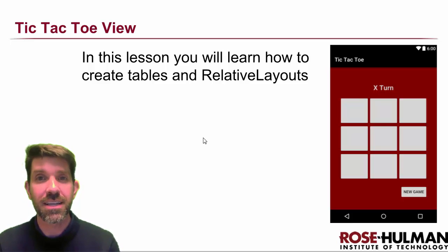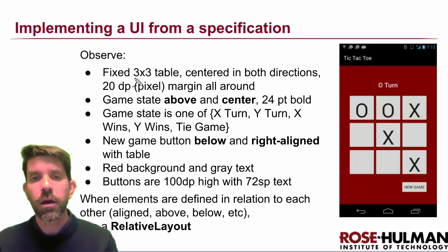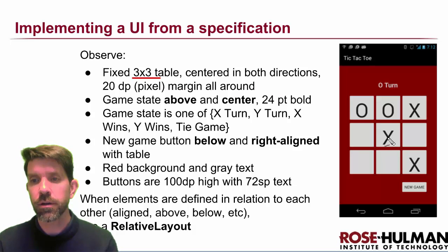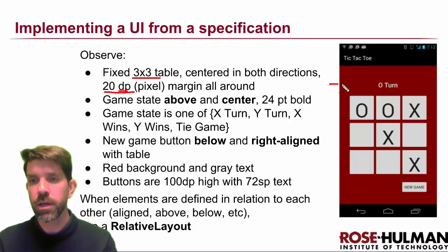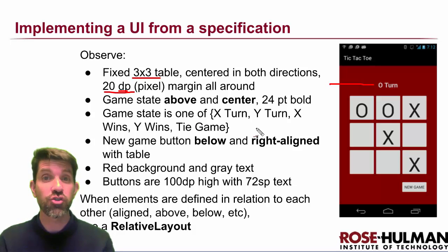It's time to make the view for the tic-tac-toe game. Looking at the specifications: it's a fixed three by three grid, not a totally general game. It's going to be centered in the screen with a 20dp margin all the way around. The game state will be displayed up top as a TextView — 24 point, bold. The game state is one of several values which will become the strings used in the program.